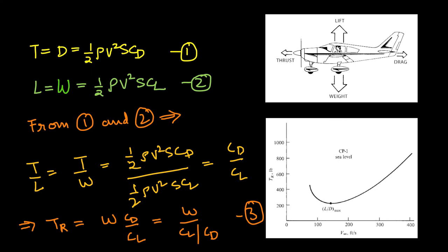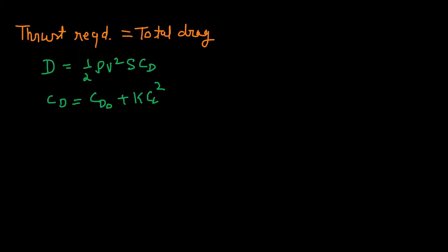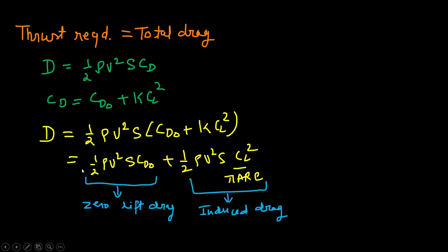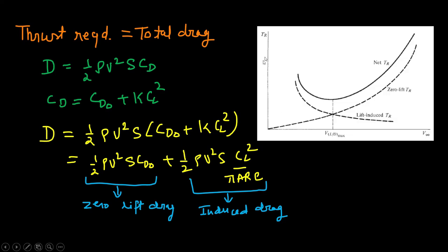From equation 1, thrust required is total drag, and we know drag equals half rho v squared S CD. CD can also be written as CD0 plus k CL squared. Using this value of CD, we can write drag equals half rho v squared S times (CD0 plus k CL squared), where k equals 1 upon pi AR e. This part denotes zero-lift drag and this part denotes induced drag, as we saw in our previous video. This is the typical thrust required curve, showing the zero-lift drag line and the induced drag line.